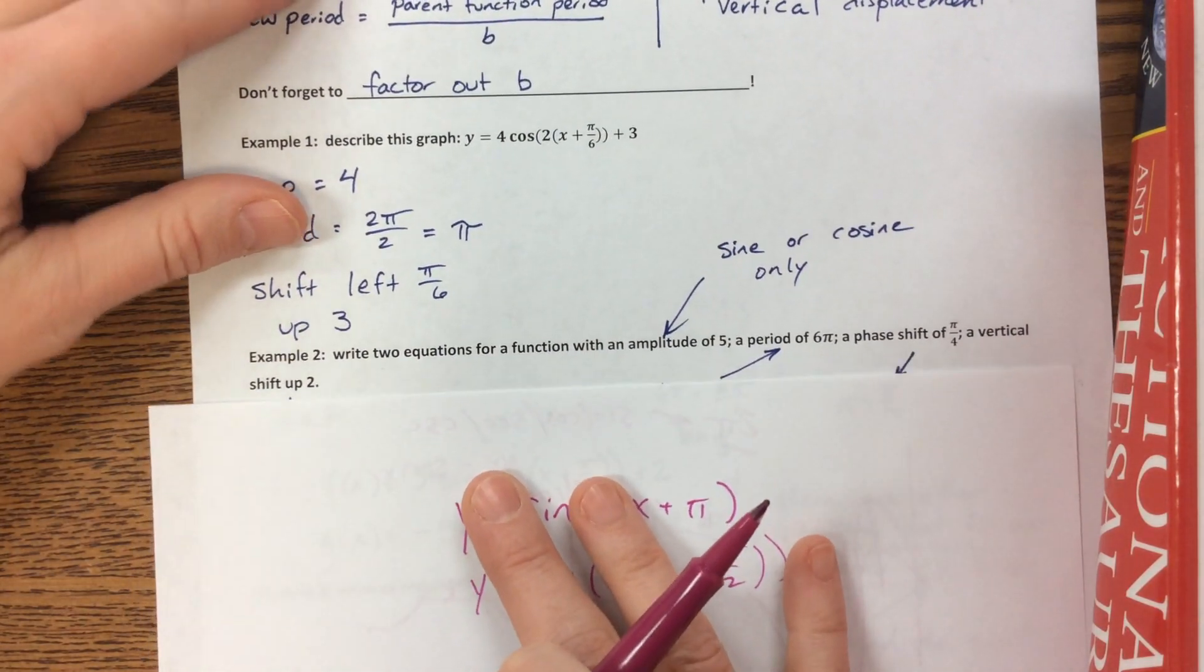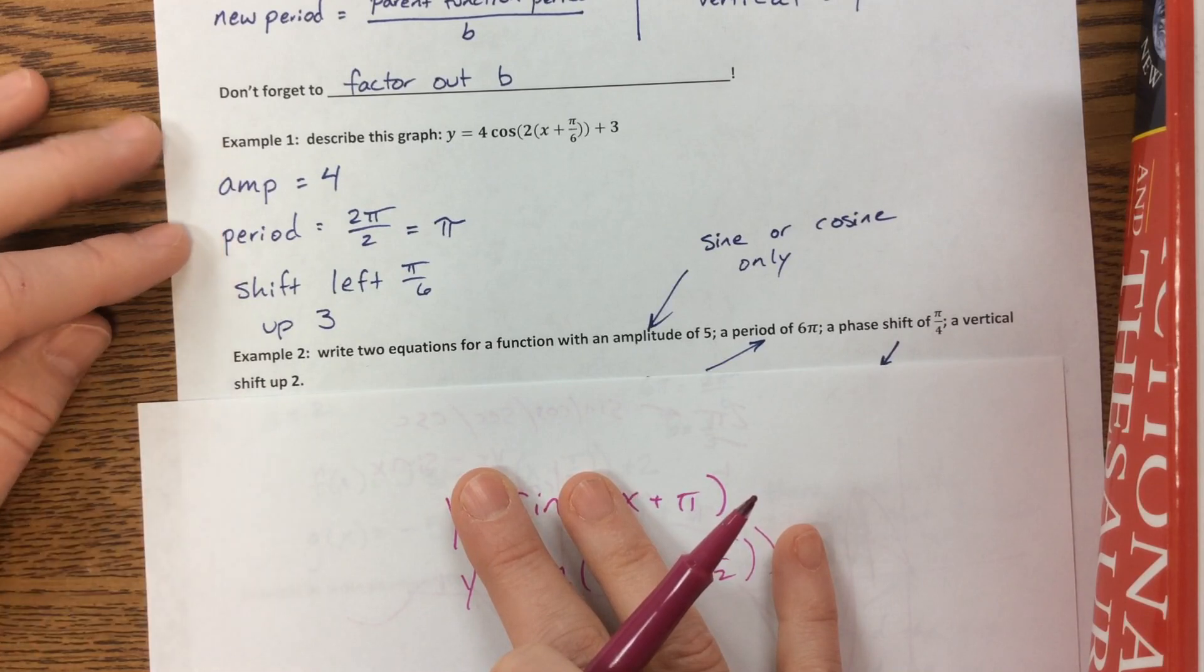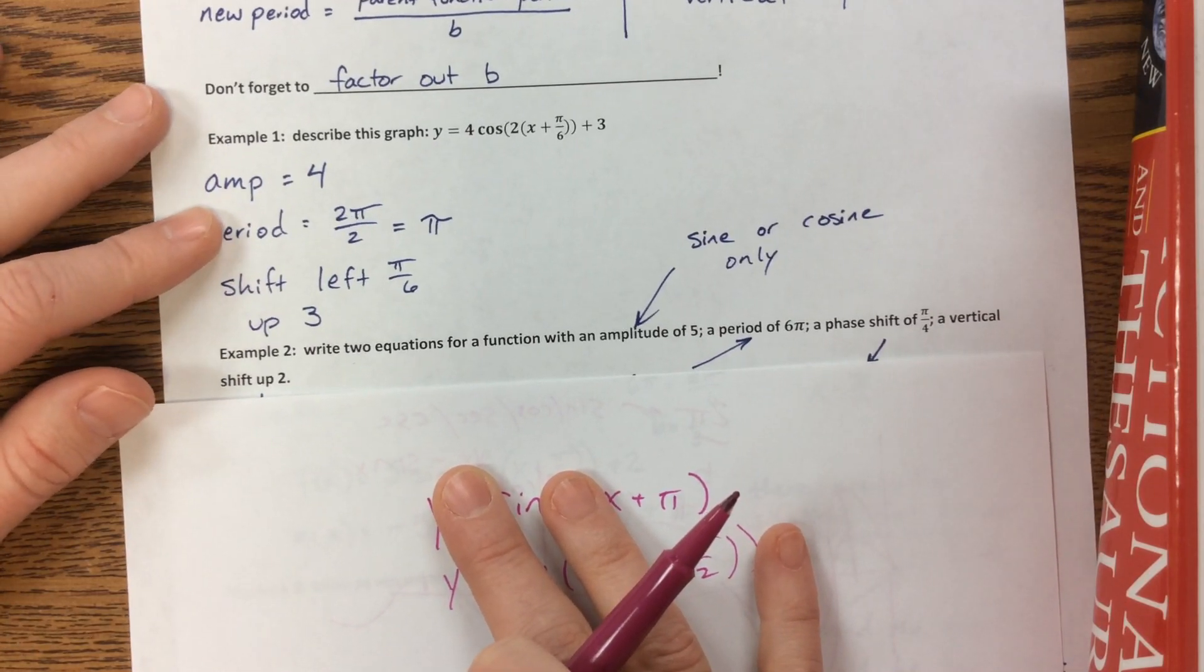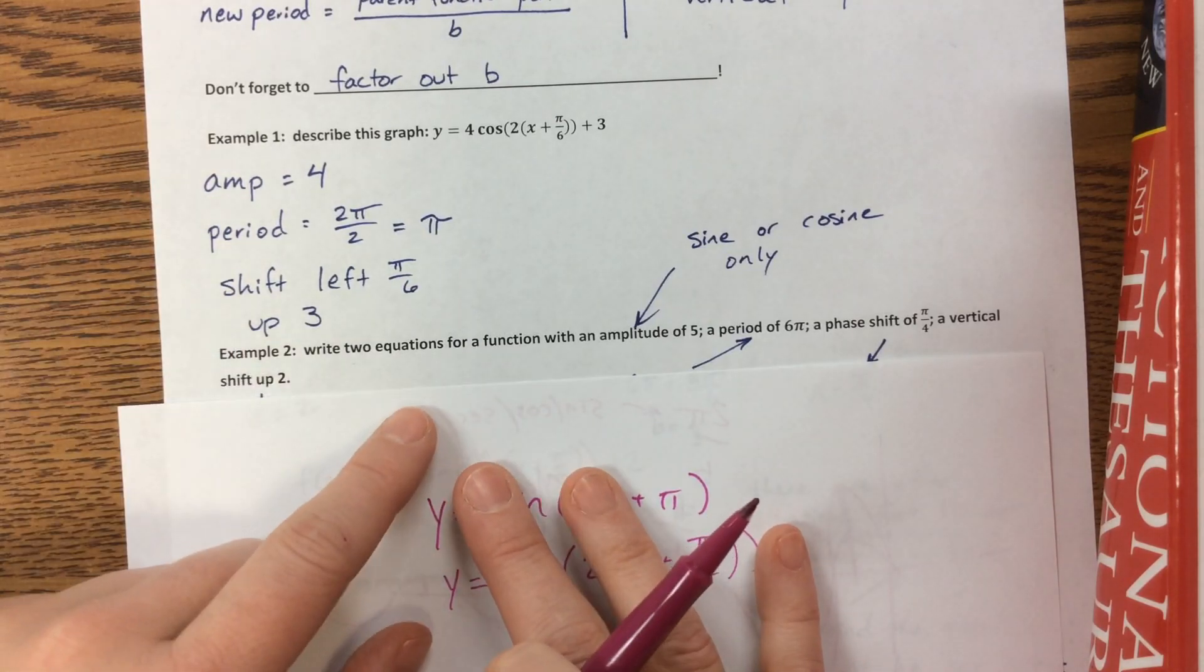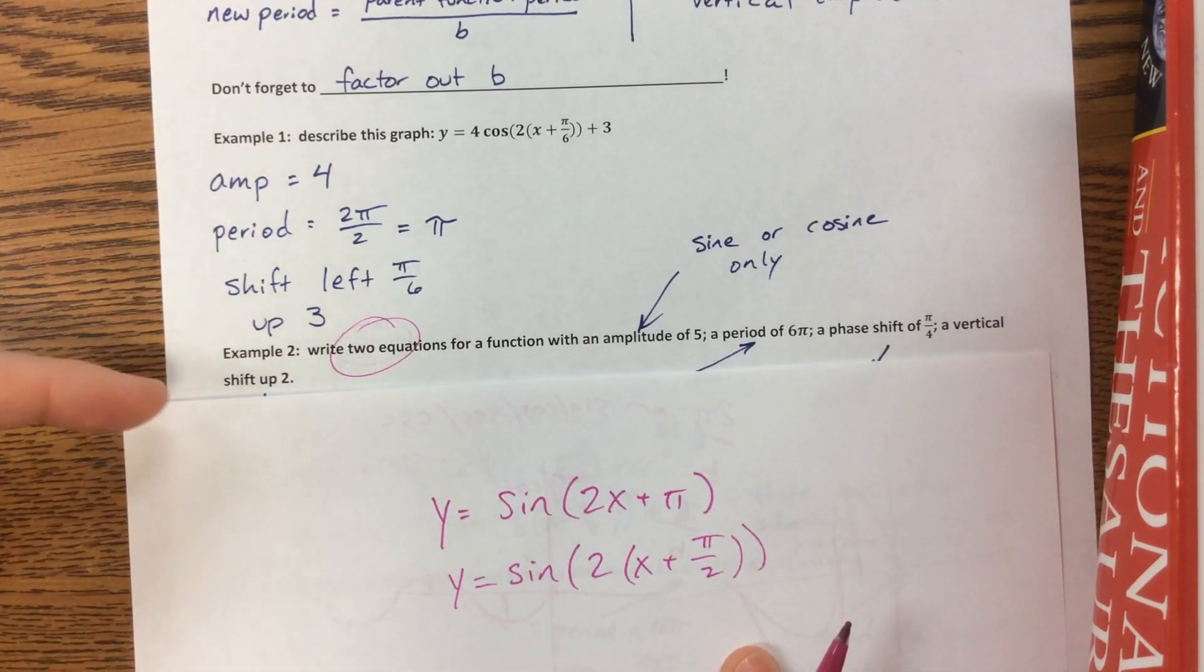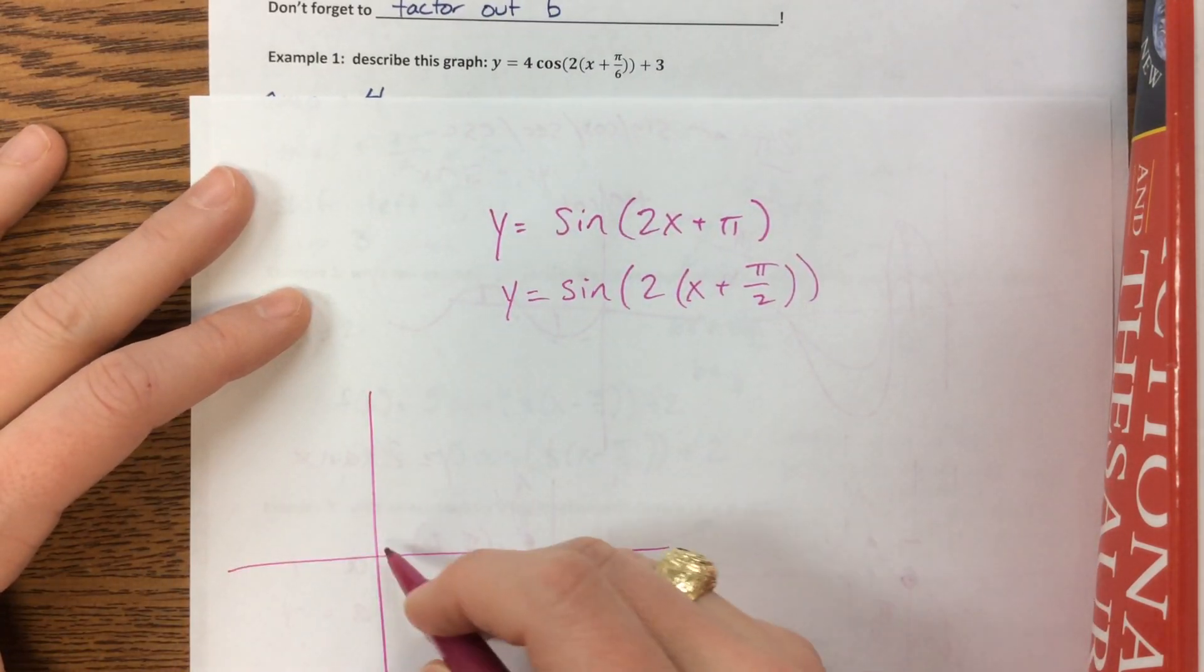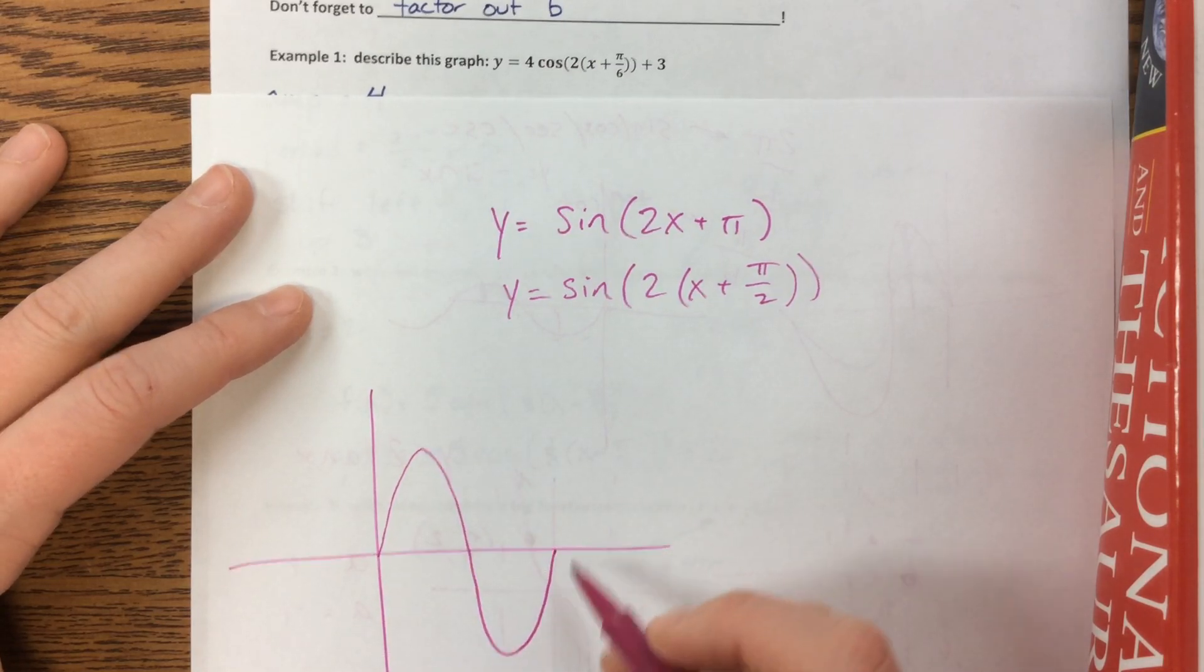The next one, as I said, write two equations for a function with amplitude of 5, a period of 6π, a phase shift of π over 4, and a vertical shift up of 2. Now you'll notice that it says write two equations. There's actually several scenarios that are valid for this. Like you could think about, I have an amplitude of 5.